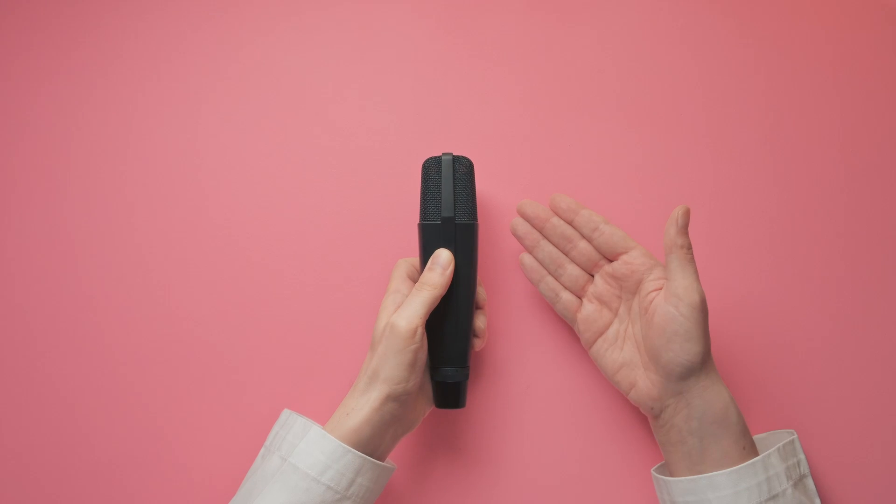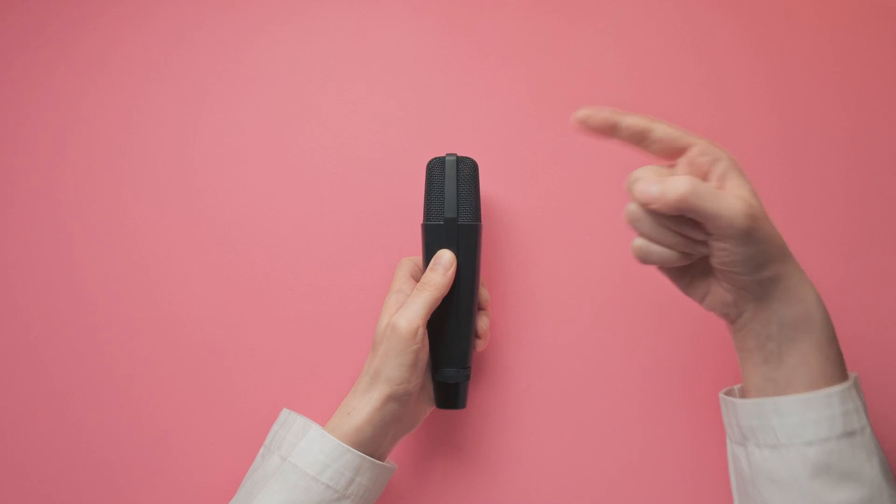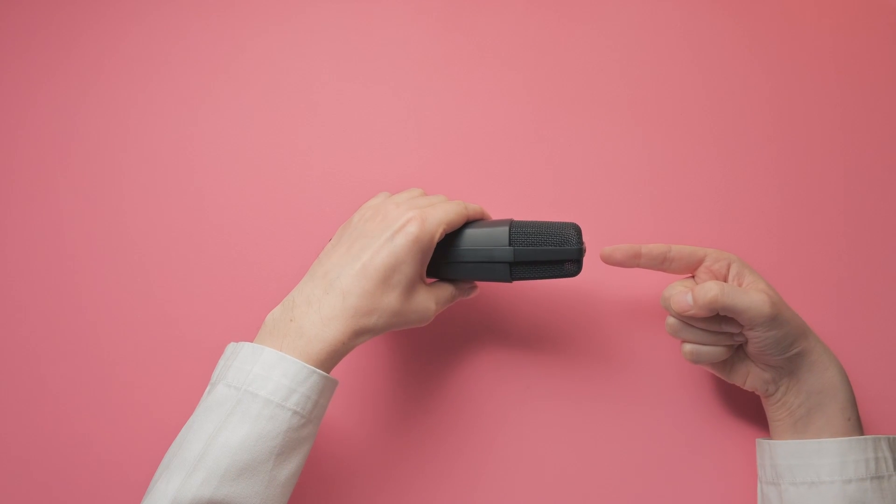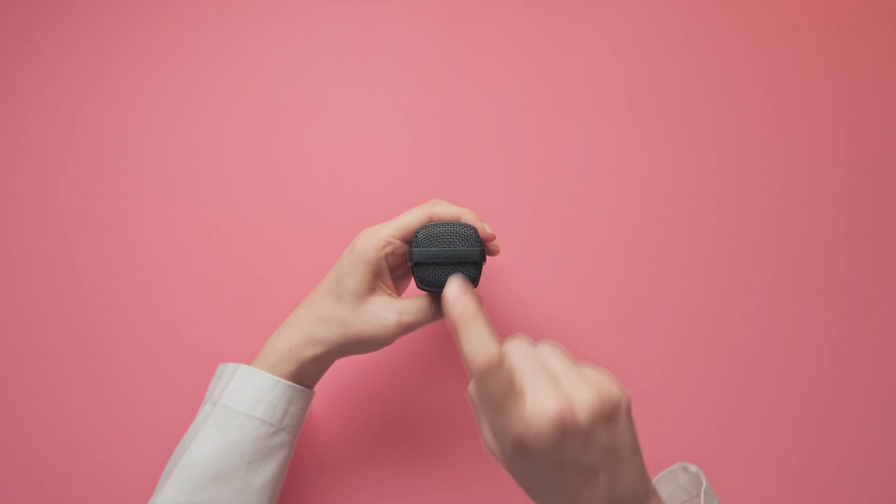Well, that one was tricky. The Sennheiser MD421 looks like a side address microphone, but it's actually a front address microphone. This is its sensitive side.